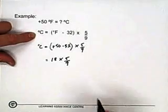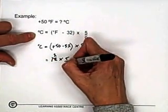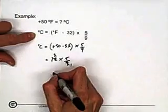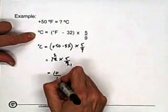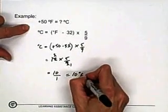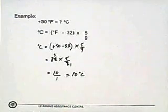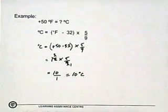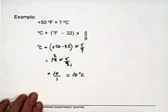50 minus 32 is 18, times 5 ninths. When working with fractions, you can cancel common factors. Divide by 9: 18 divided by 9 is 2, and 2 times 5 is 10 over 1, or 10 degrees Celsius. 50 Fahrenheit is not particularly warm — it's a pleasant fall day but not hot. 10 degrees Celsius is your corresponding Celsius measure.